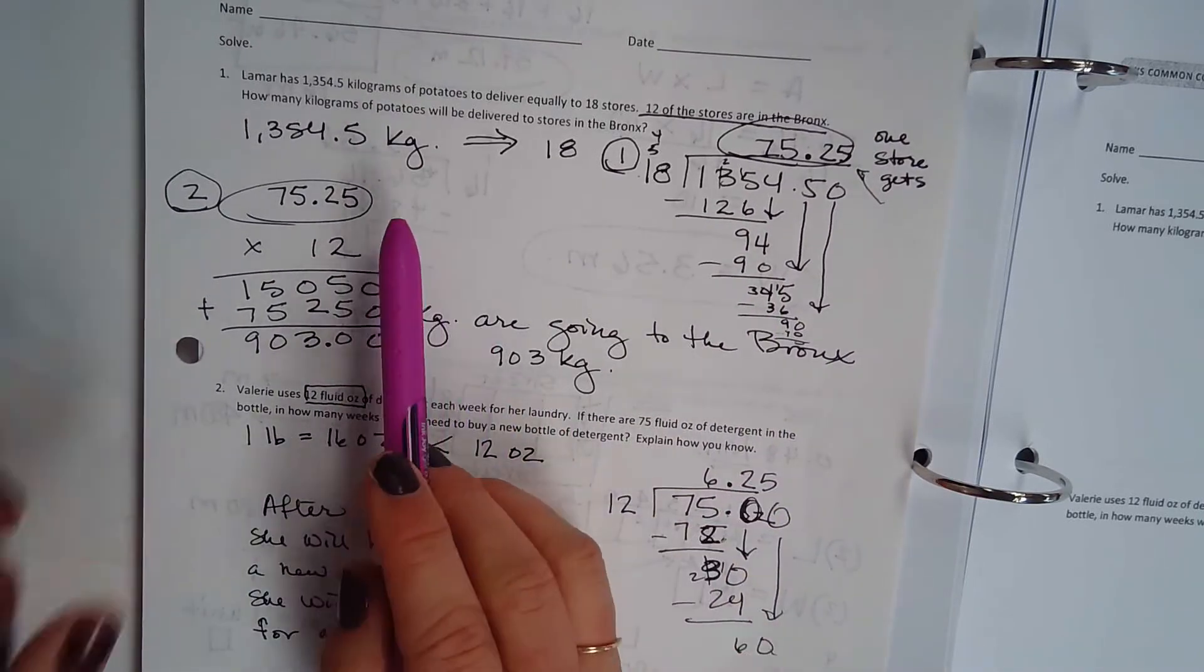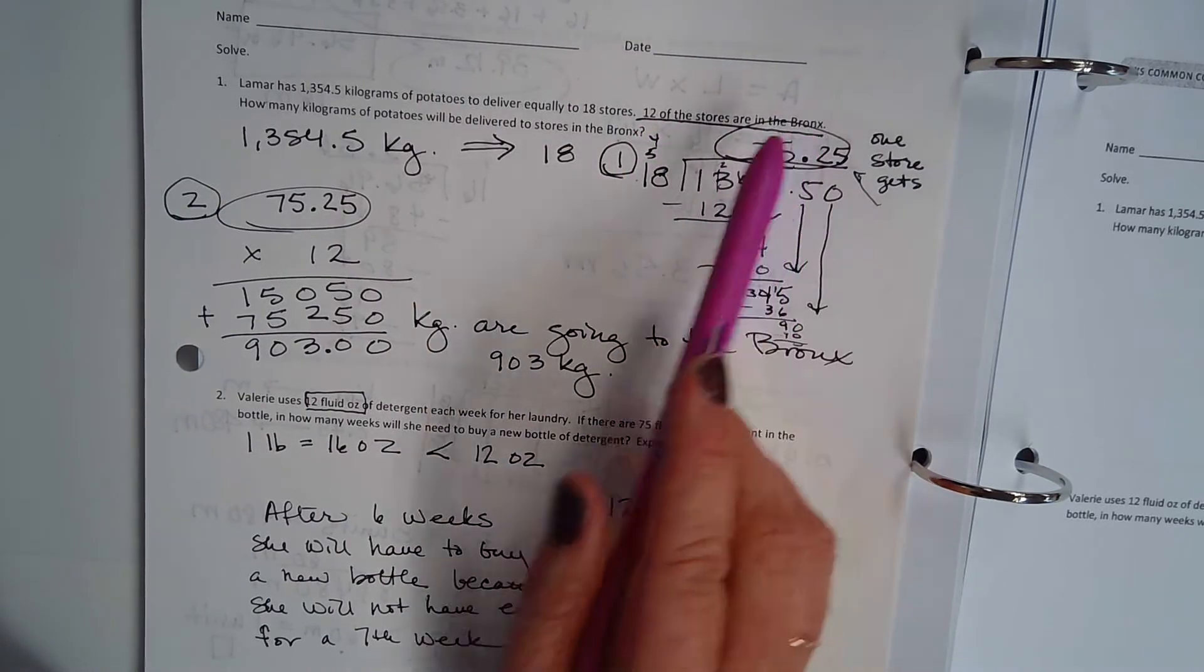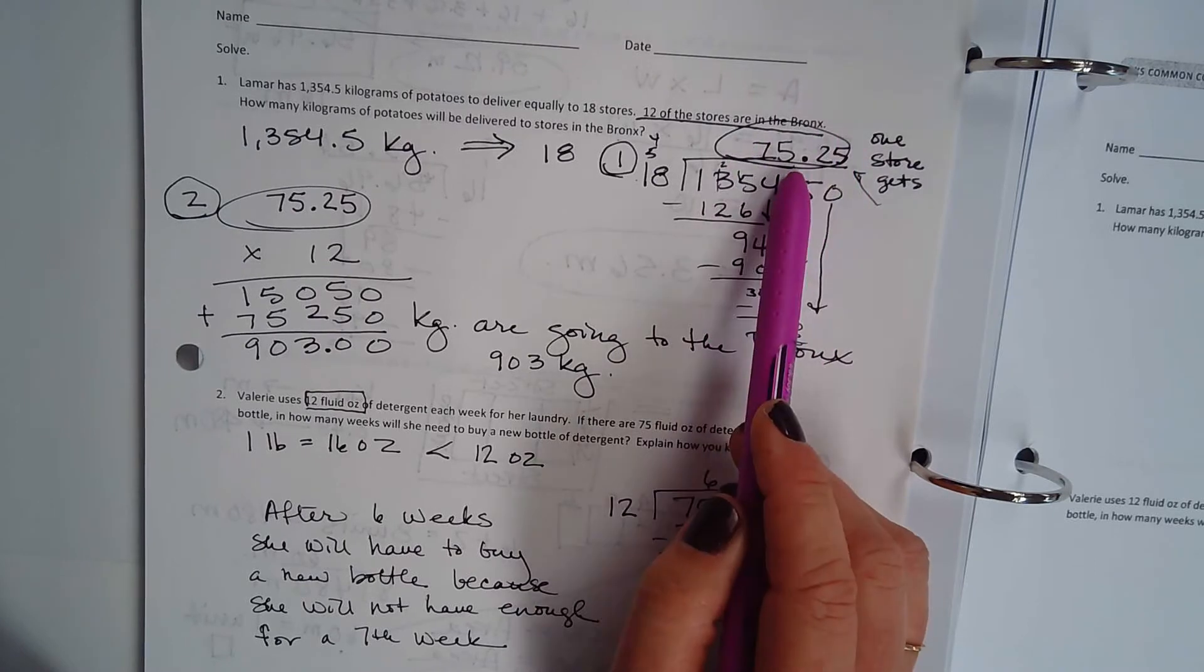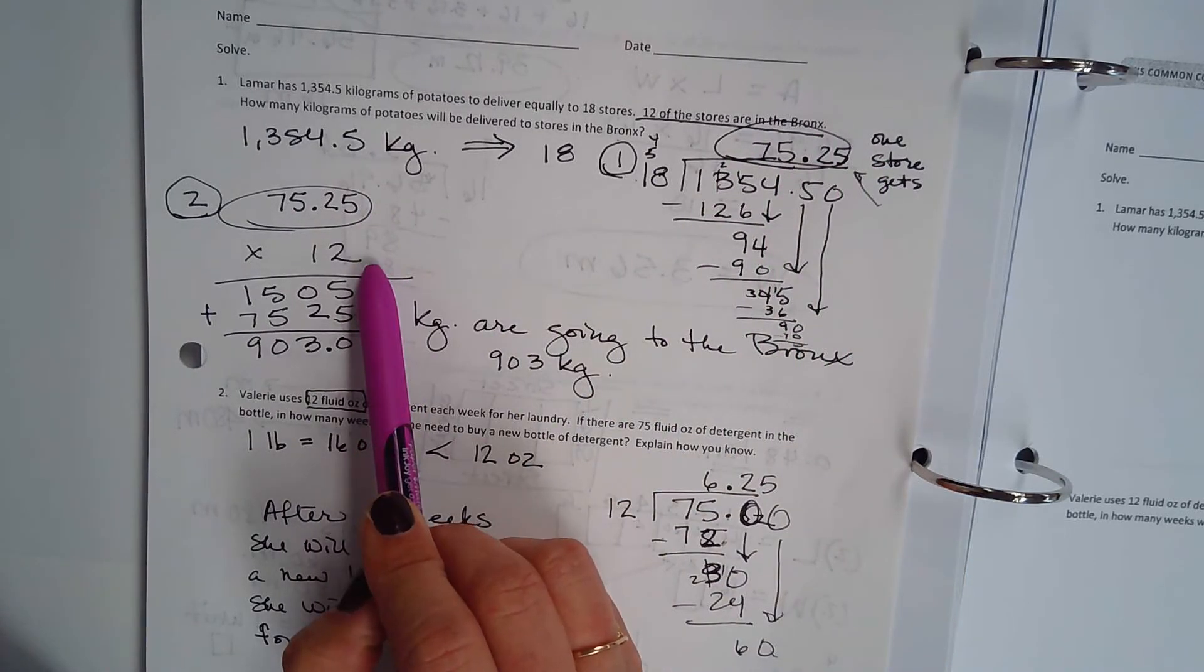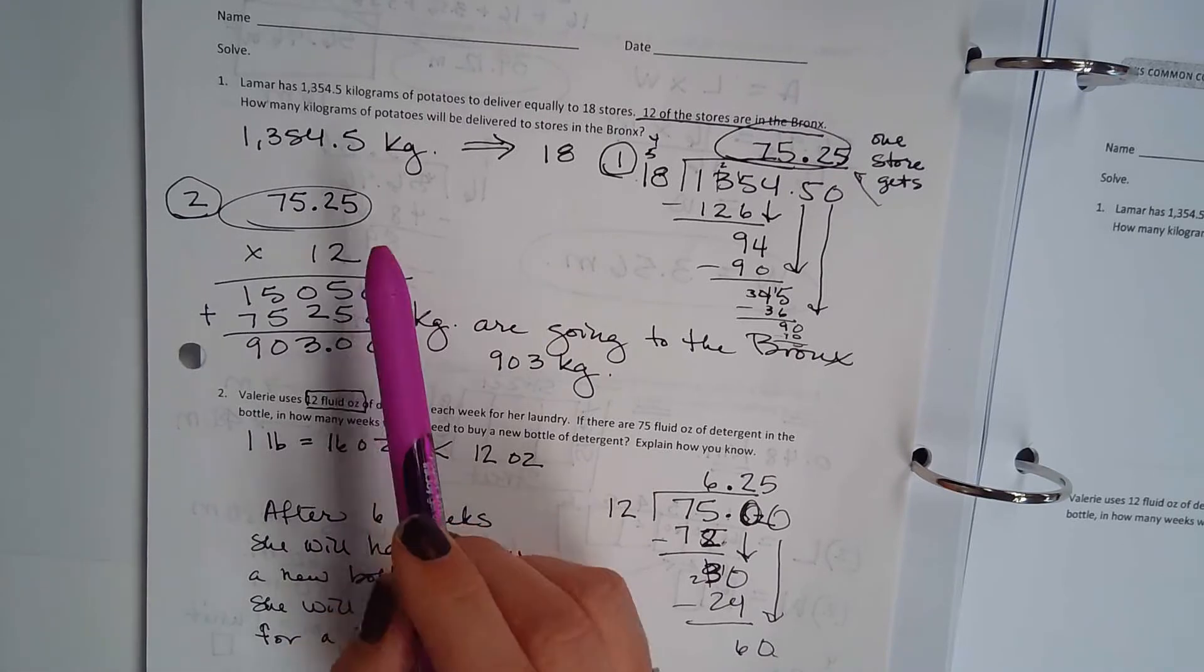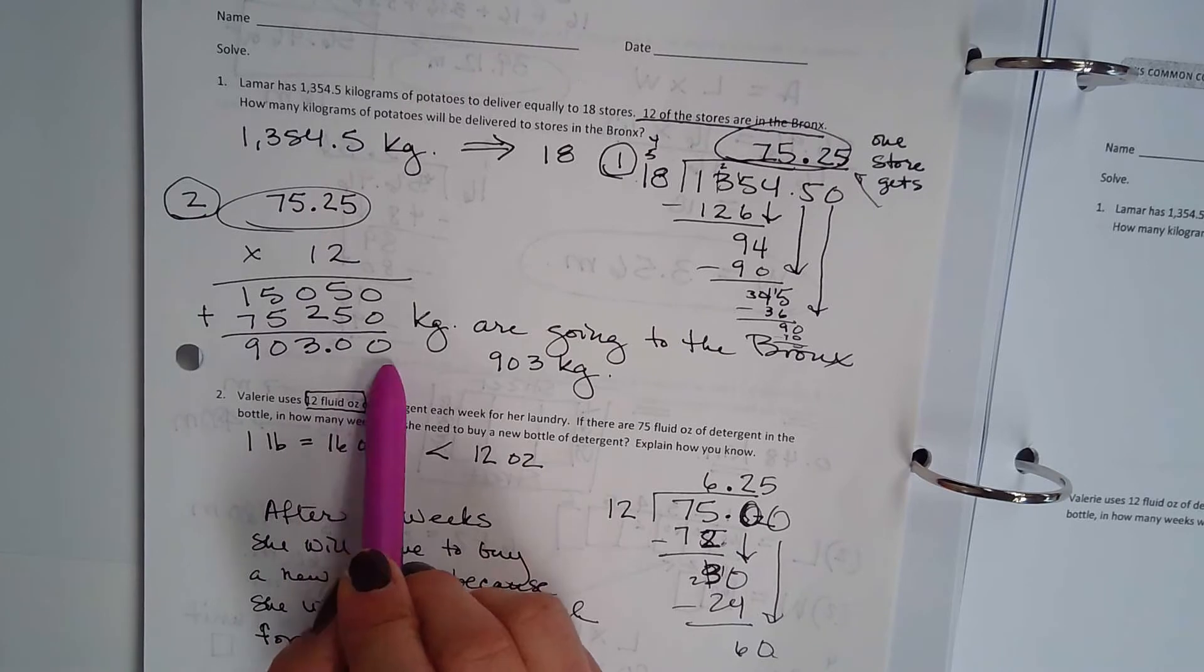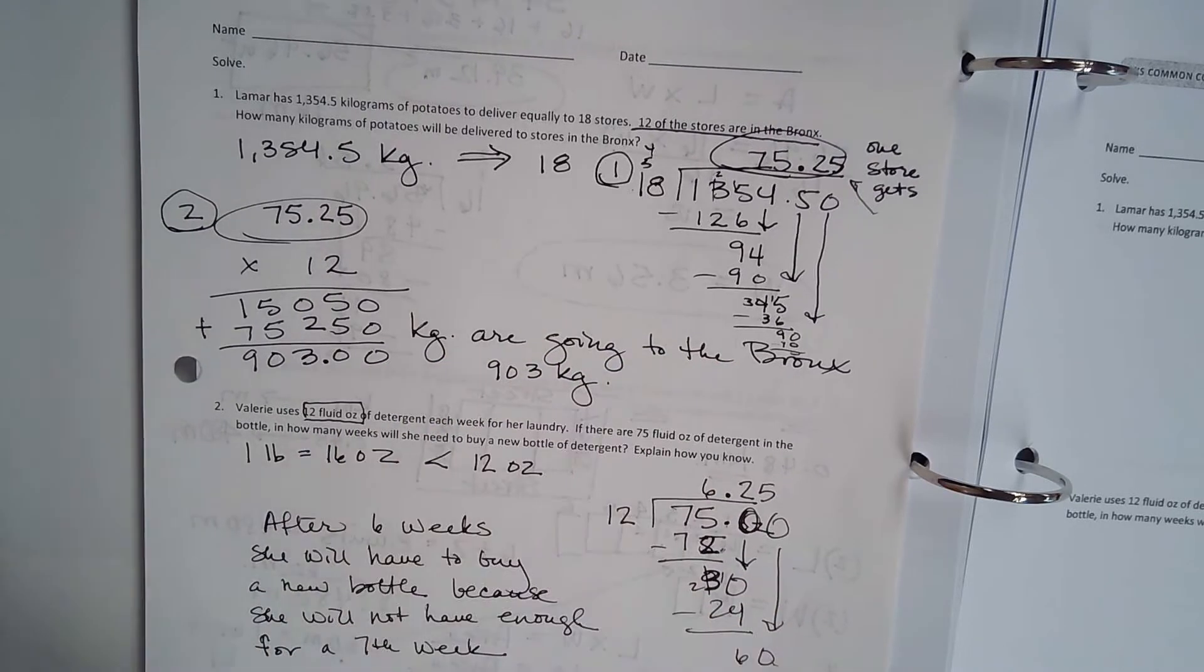Step 2. Now 12 of the stores are in the Bronx, so we need to take 75.25, which is one store, and multiply it by 12 stores. And we end up with 903 kilograms are going to the Bronx.